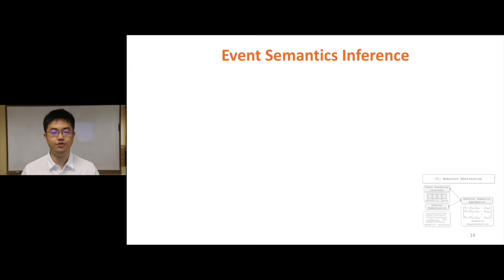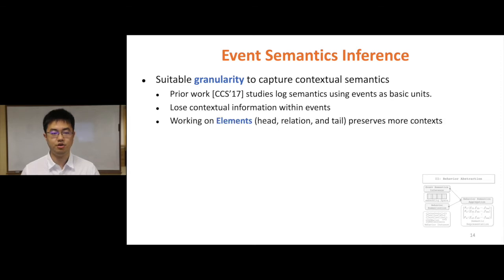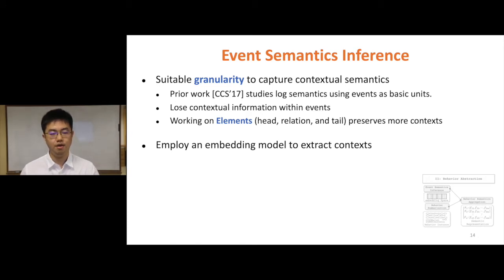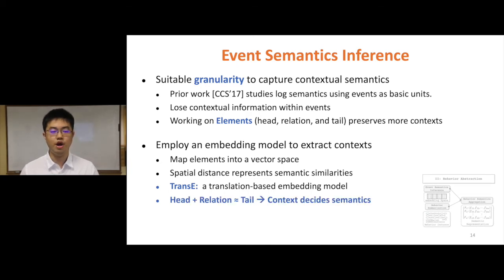To further use contextual information to capture event semantics, we first need a suitable ground representation. Prior work studies semantics using events as a basic unit; however, this loses contextual information within the event. Based on this observation, we decided to work on element-level semantics inference to preserve more context. A general approach to capturing contextual semantics is to employ an embedding model, which can map elements into a vector space where the spatial distance represents semantic similarities. Specifically, we use a translation-based embedding model called TransE to infer event semantics. The core idea of TransE is to use head plus relation to predict tail, which mirrors our intuition of using context to define semantics.